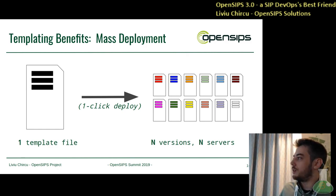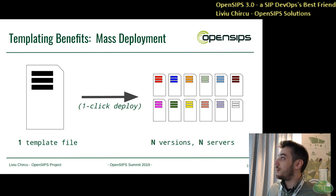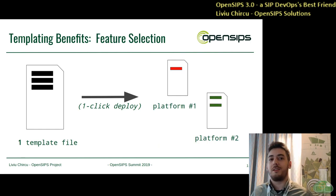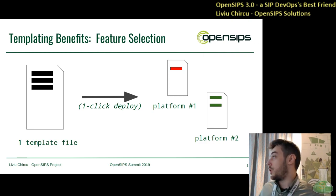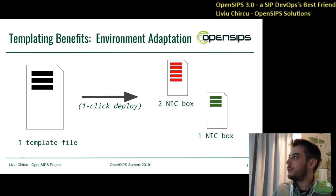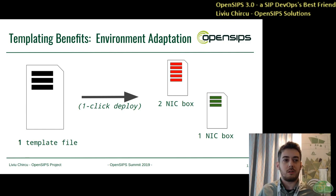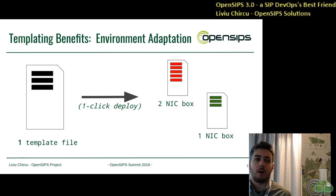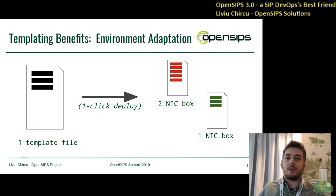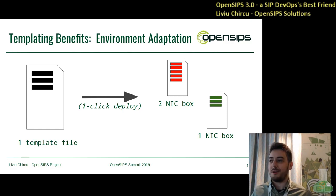I talked about one-click deploy to configure the script into a multitude of variants. Another possible benefit is that you get to select the features you have in your script — you might have the same core generic platform obtained through the templating engine but selectively enable features for each customer. You could also adapt to the environment using strong templating languages such as Jinja2, where you can iterate through network interface cards available on a given box. This saves even more headaches of having to customize the script for each target server — it all just works.